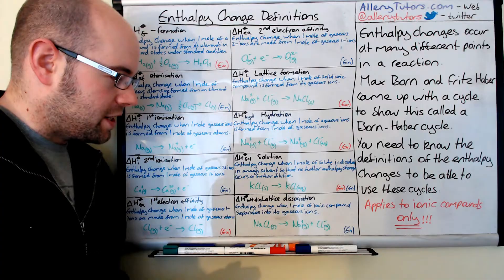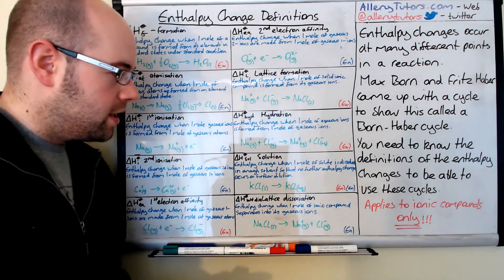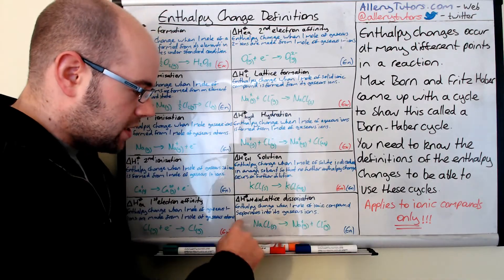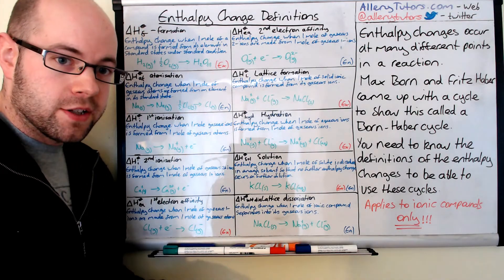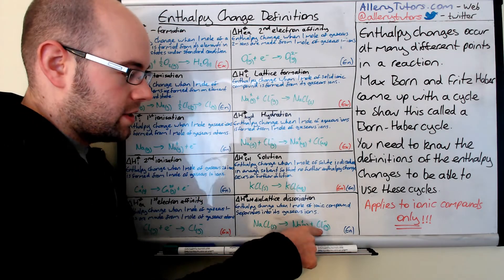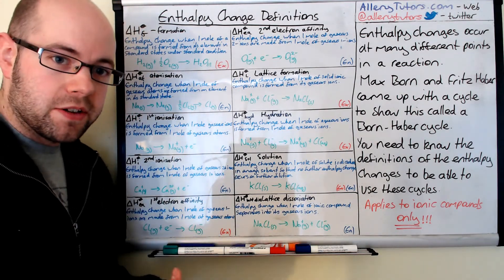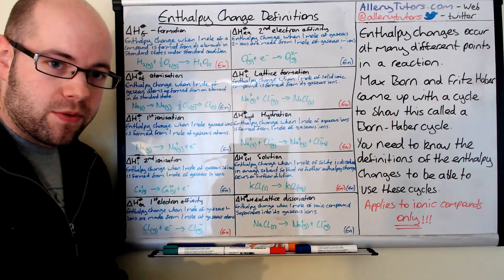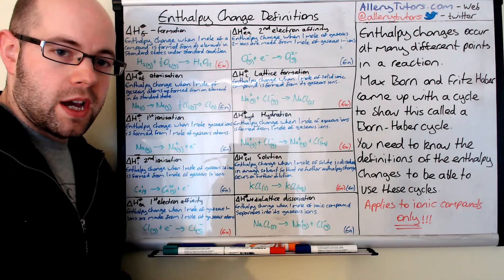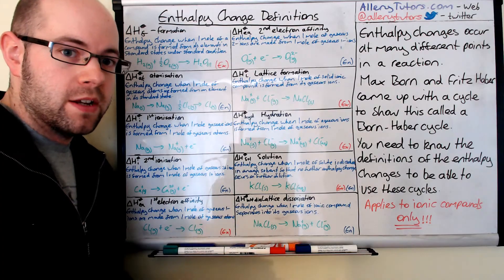The last one is lattice dissociation enthalpy. This is the enthalpy change when one mole of ionic compound separates into its gaseous ions. Here, NaCl solid forms Na+ gas and Cl- gas. This is an endothermic process because we are separating NaCl in its solid form into two ions. Energy needs to be put in to do that.